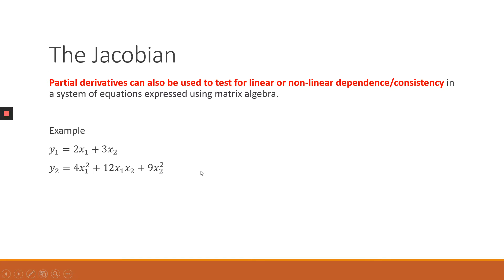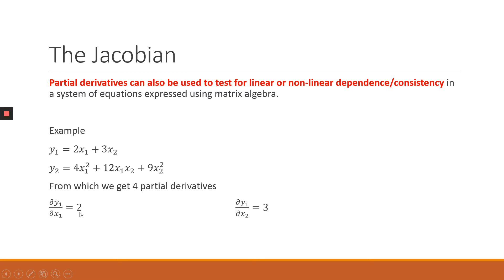What we're going to do is take partial derivatives with respect to X1 and X2 of each of the equations, ending up with four partial derivatives. When you partially differentiate equation one — the partial derivative of Y1 with respect to X1 — we get 2. The partial derivative of Y1 with respect to X2 we get 3. Then 8X1 plus 12X2, and the partial derivative of Y2 with respect to X2 gives us 12X1 plus 18X2.